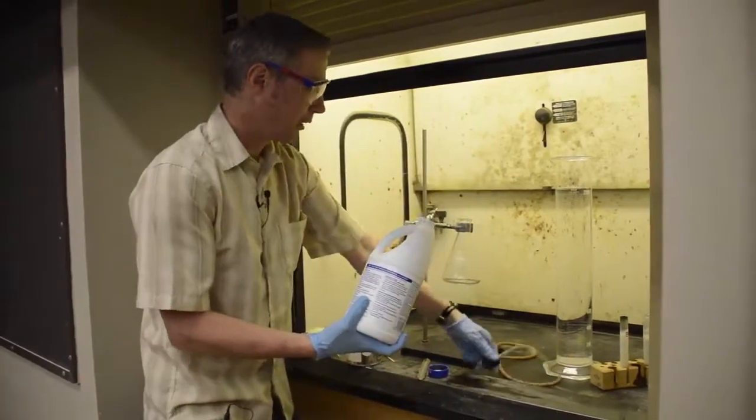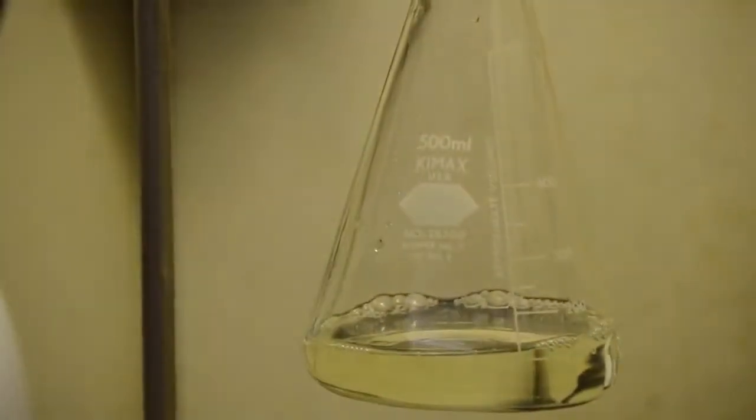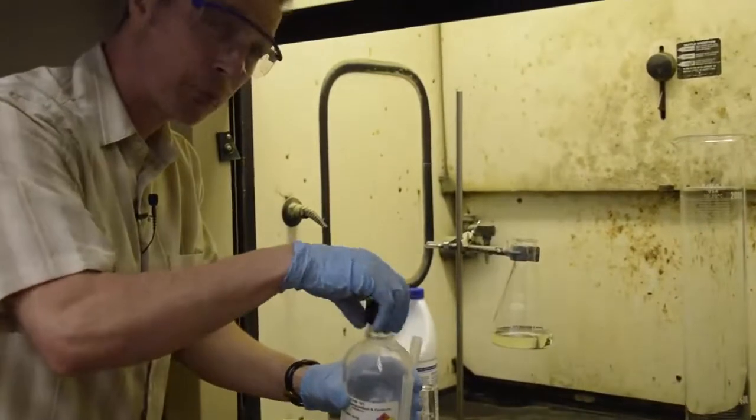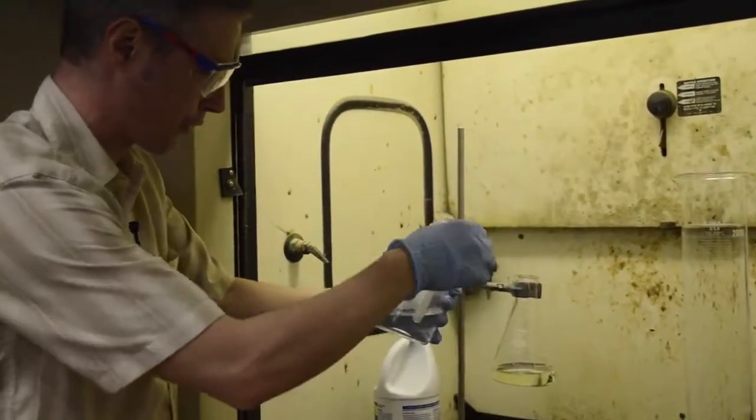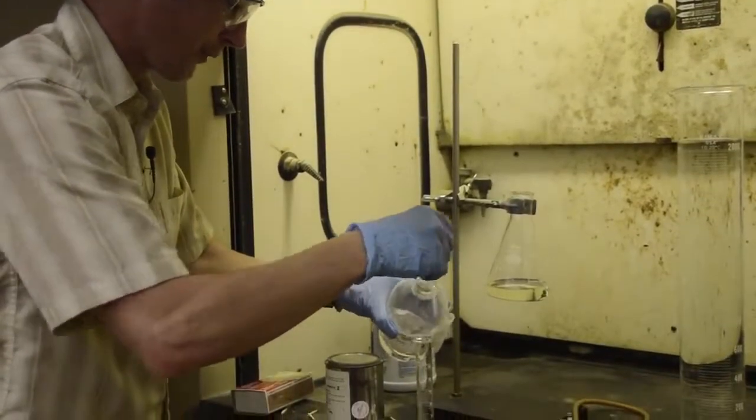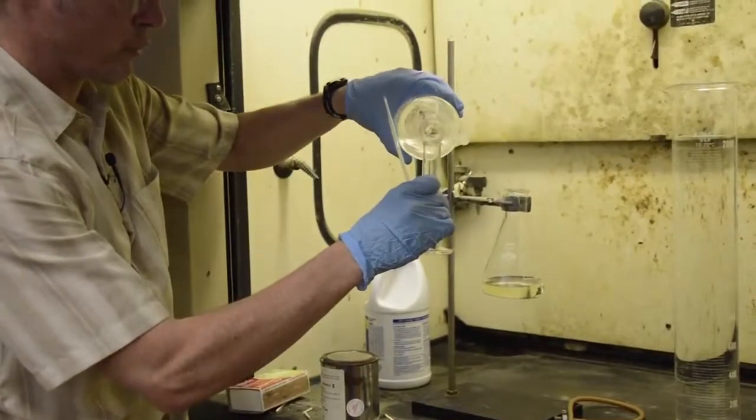I've got an Erlenmeyer flask, and I'm going to take about 100 milliliters of bleach. Then I'm going to add about 10 milliliters of hydrochloric acid. This is pretty strong hydrochloric acid, six moles per liter, which is about 60 times the strength of your stomach acid.